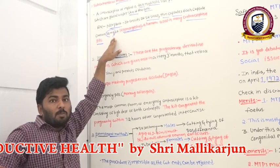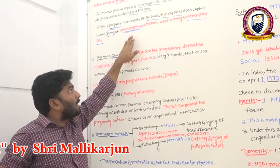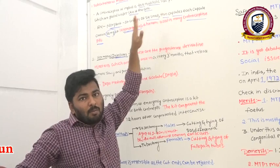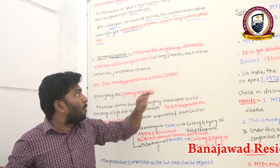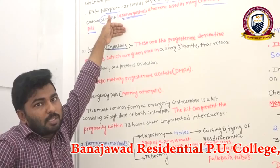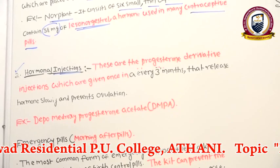With oral contraceptives, one tablet of 20 mg is taken per day. Here, six small matchstick-sized capsules are placed in the body and slowly release the drug, which prevents the ovulation process — similar in mechanism to oral contraceptive methods.